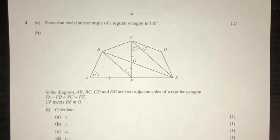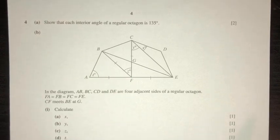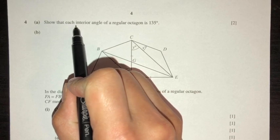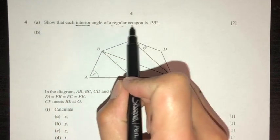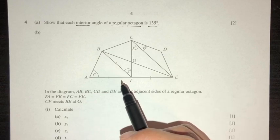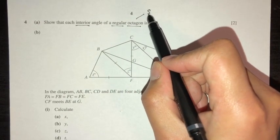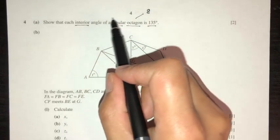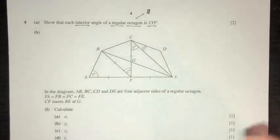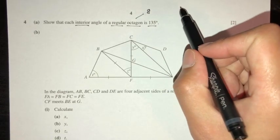Hello guys, welcome to this video. This is a requested question, number four. Part one: show that each interior angle of a regular octagon is 135°. First thing you have to know is how many sides an octagon has — it has eight sides. Regular means all the sides are equal, so we can find the interior angle.